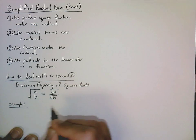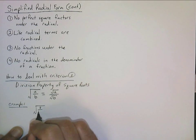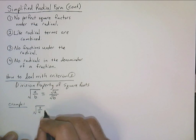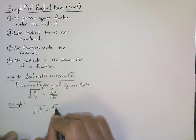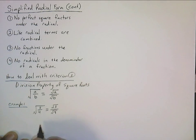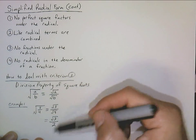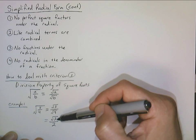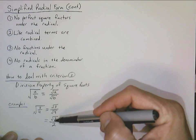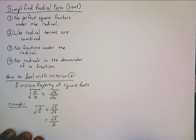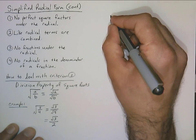Just to use some numbers, here's a simple example. If we had the square root of three-fourths, well, we have a fraction underneath the radical sign — we can't have that. So we're just going to distribute that square root to both the numerator and the denominator. We can see that we know what the square root of four actually is, so this is just the square root of three over two. Now this is simplified: three doesn't have any perfect square factors, there's no fraction underneath the radical, and the denominator is not under a radical.